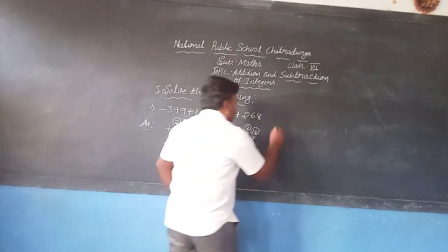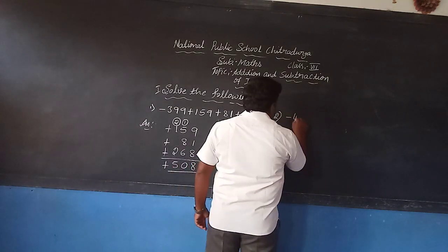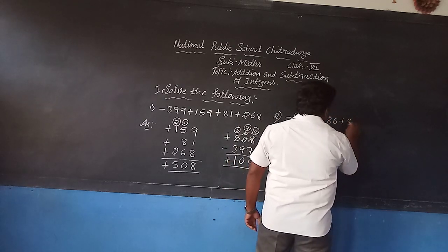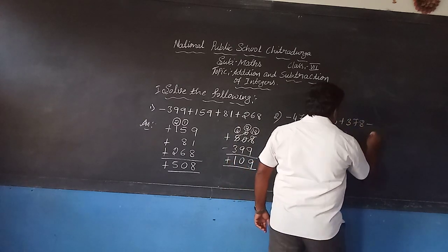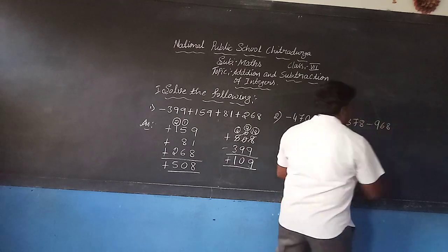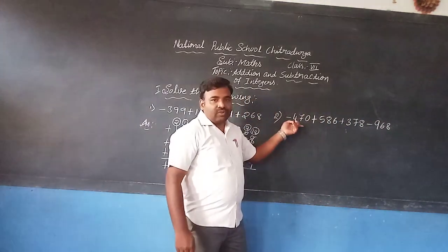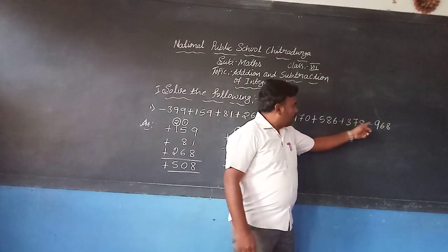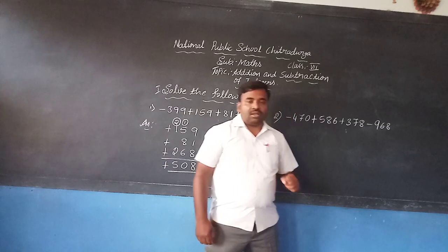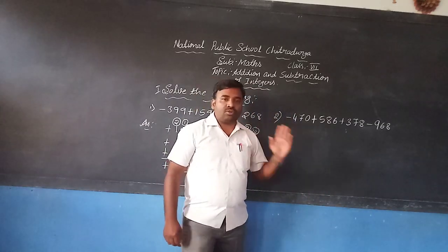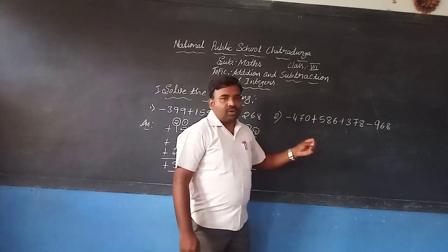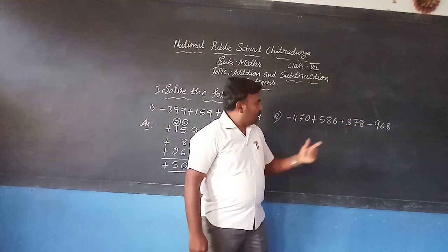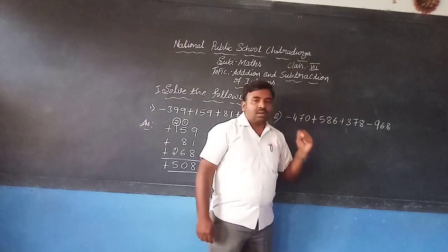Now another problem: minus 470 plus 186 plus 378 minus 968. By using the rules, solve this problem. Students, observe — two integers are in the minus sign and another two integers are in the plus sign.